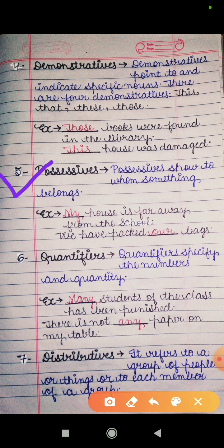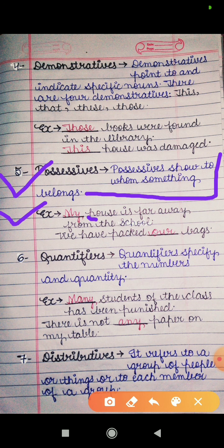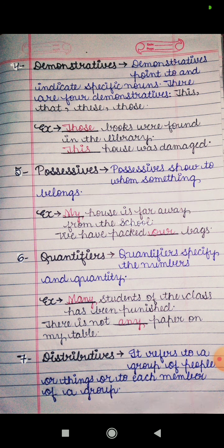Next definition is of possessives. As the name suggests, possessives show to whom something belongs — they show whose possession something is. Example one: 'My house is far away from the school.' House is a noun, and my is referring to house, telling us whose house it is — my house. Example two: 'We have packed our bags.' Bags is a noun, and our is referring to bags, telling us that the bags belong to us. That's why it is a possessive determiner. Possessive determiners show that a thing belongs to someone.